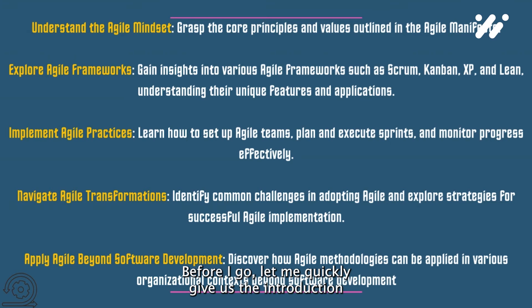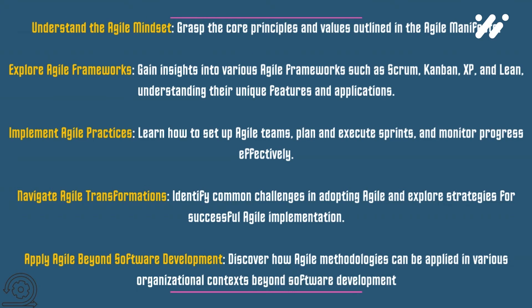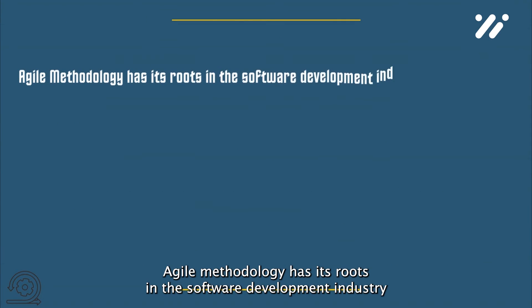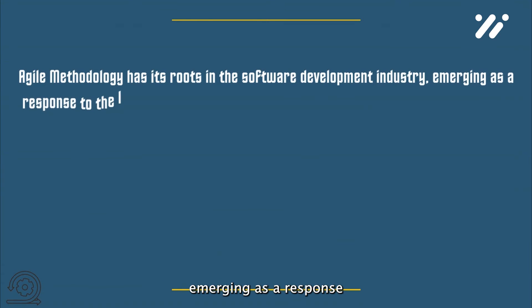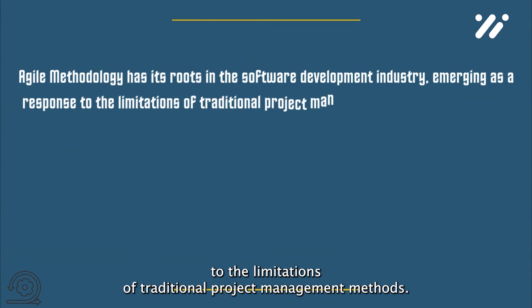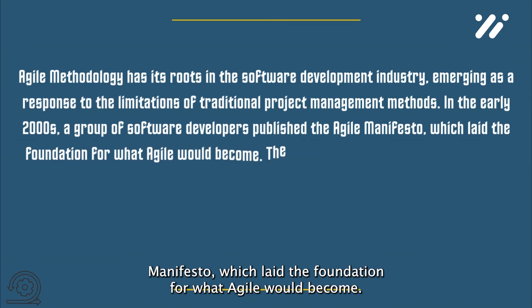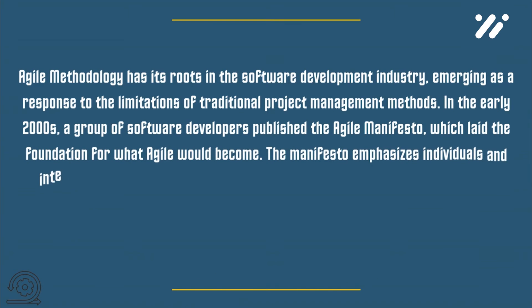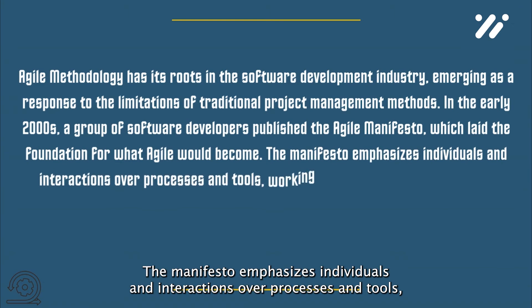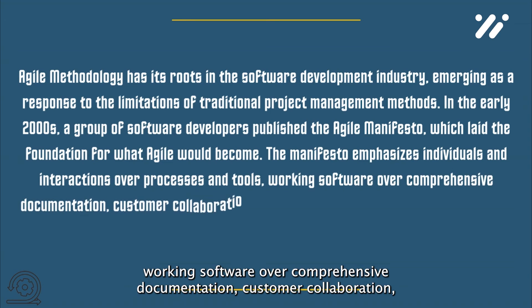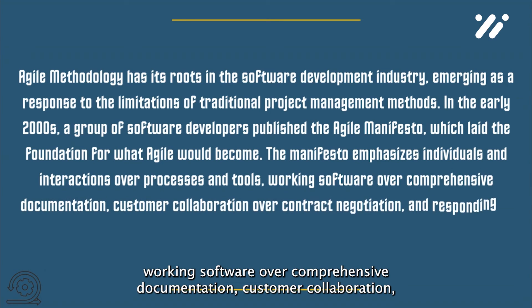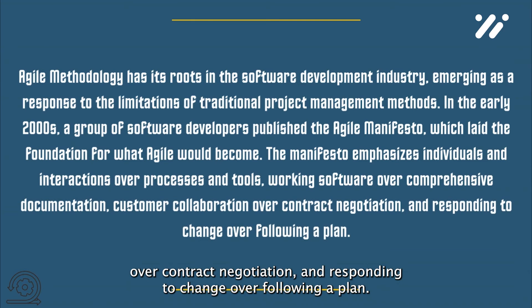Let me quickly give us the introduction to Agile methodology — the history and evolution. Agile methodology has its roots in the software development industry, emerging as a response to the limitations of traditional project management methods. In the early 2000s, a group of software developers published the Agile Manifesto, which laid the foundation for what Agile would become. The manifesto emphasizes individuals and interactions over processes and tools, working software over comprehensive documentation, customer collaboration over contract negotiation, and responding to change over following a plan.